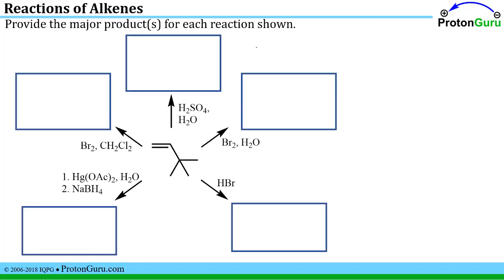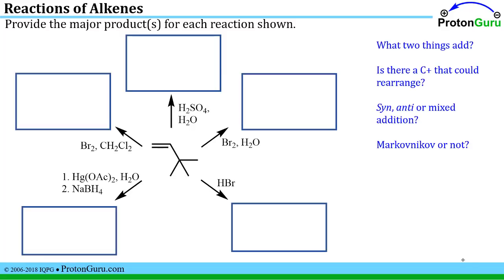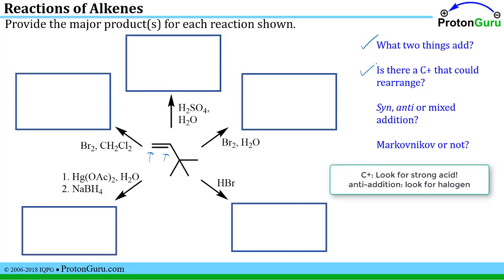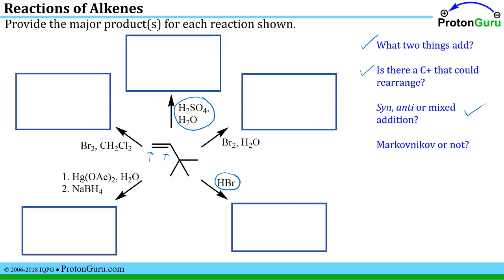When mixing new oxymercuration reactions with older ones, you need to sort out reaction conditions — flashcards and practice quizzes on ProtonGuru.com can help. For addition reactions to alkenes, ask: What two things add? Is there a carbocation that can rearrange? (Only when a strong acid generates a carbocation.) Is it syn, anti, or mixed addition? Anti-addition only occurs when there is a halogen present — those are the only anti-addition reactions in a sophomore organic chemistry course. Finally, is the addition Markovnikov or not?